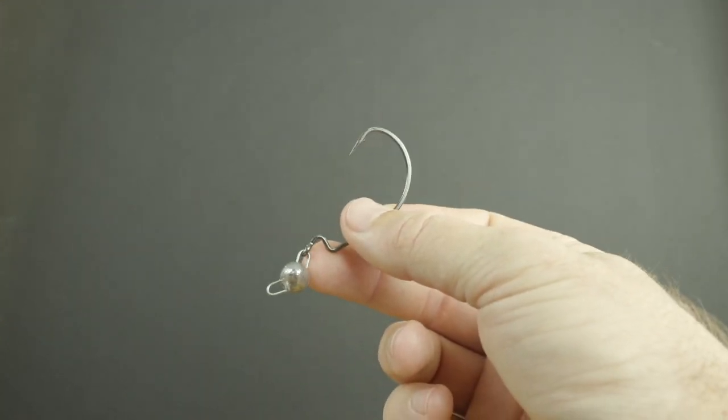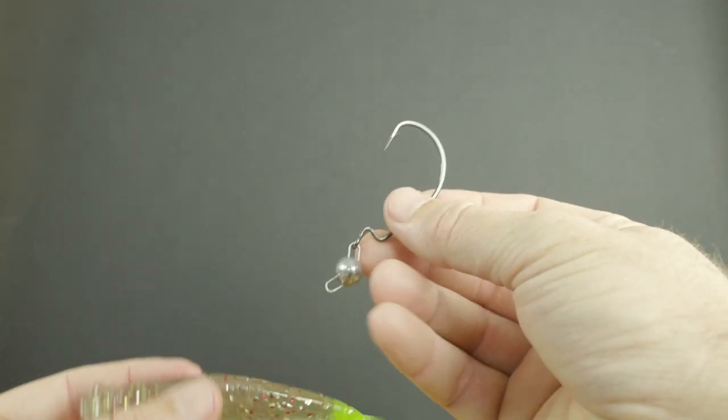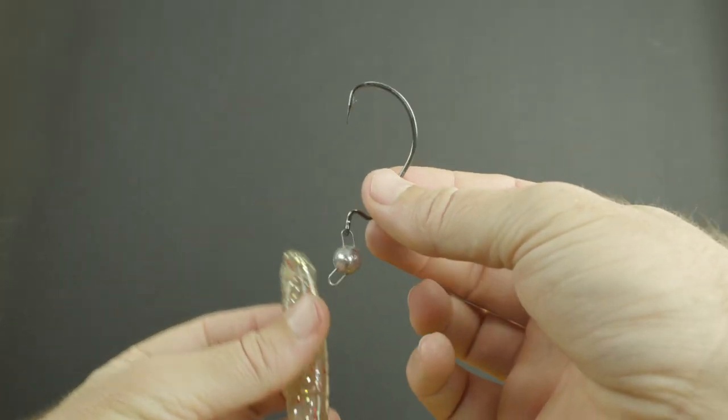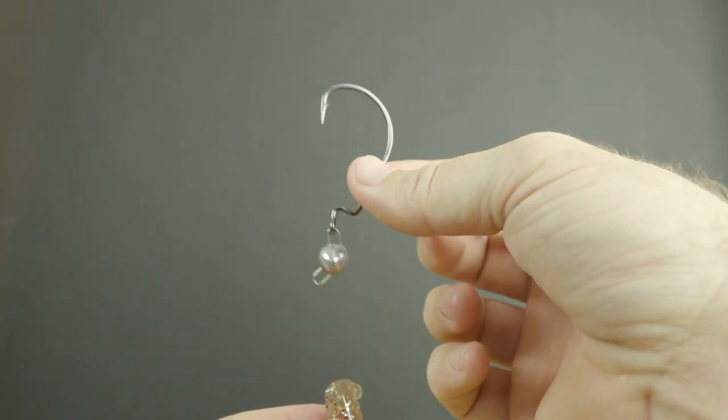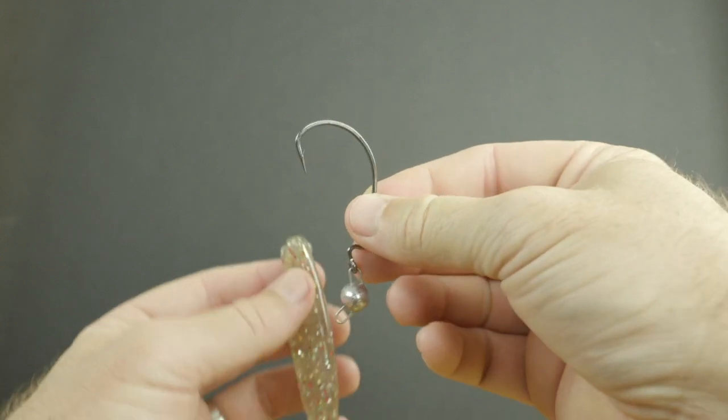So let me go ahead and show you how it works in case you're new to it. We'll do this one first - this is the one that's most unique. How this works is basically a worm hook with a swiveling football jig on the top.